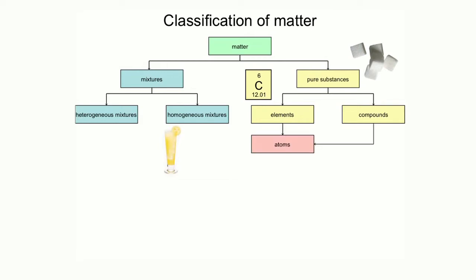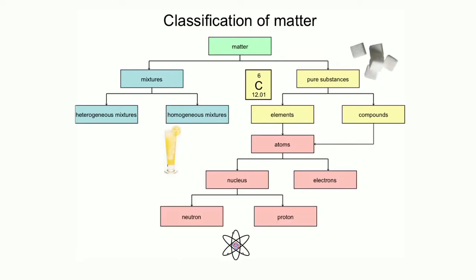Now another word for an element is an atom. So both compounds and elements are made of atoms. And atoms, in turn, consist of a nucleus and electrons, as we have learned. And the nucleus is composed of protons and neutrons. Again, the flow goes all the way from mixtures and pure substances down to the level of fundamental particles, the protons, neutrons, and electrons.